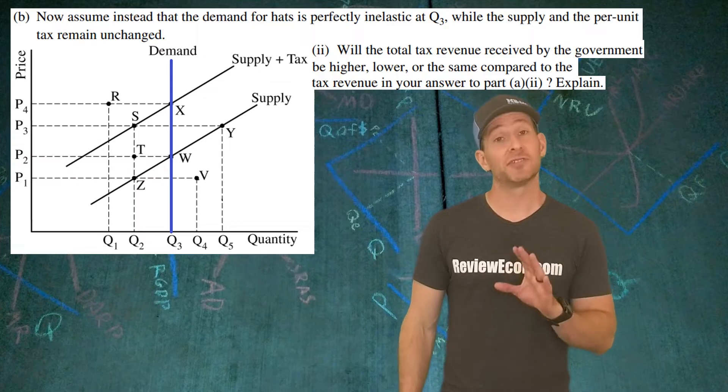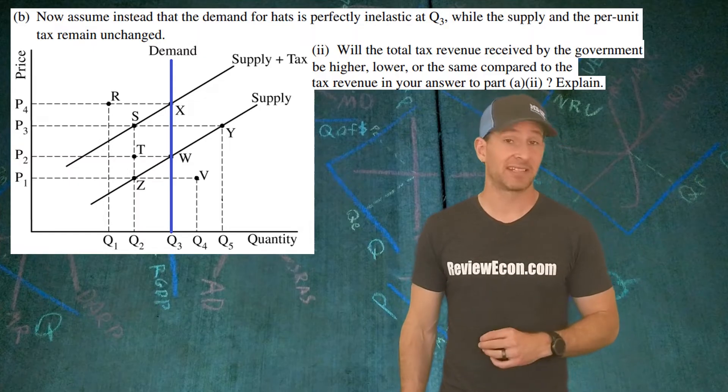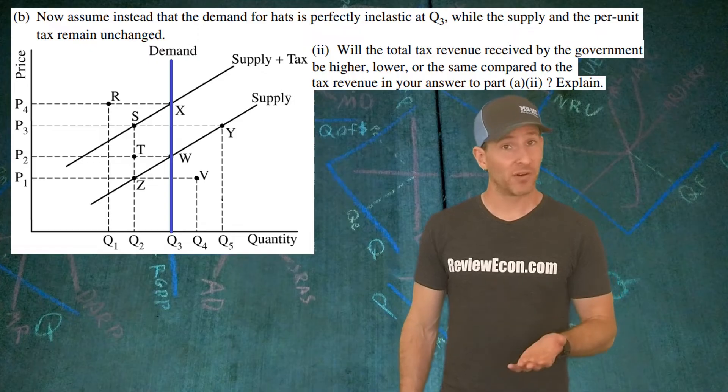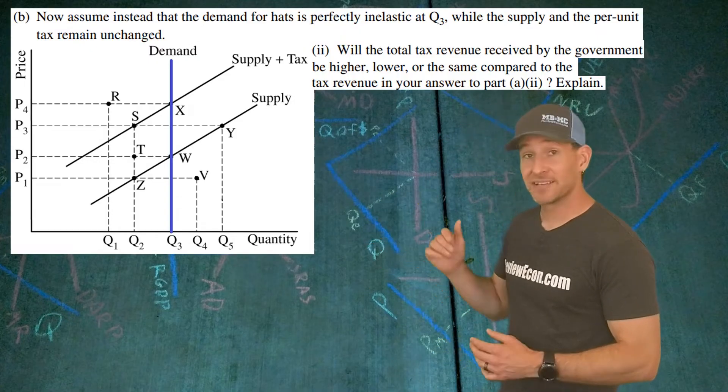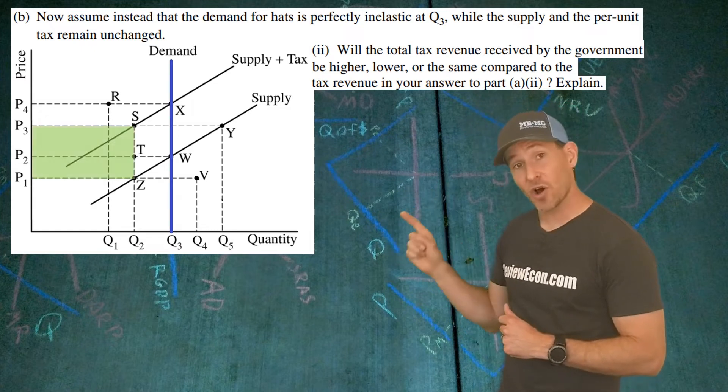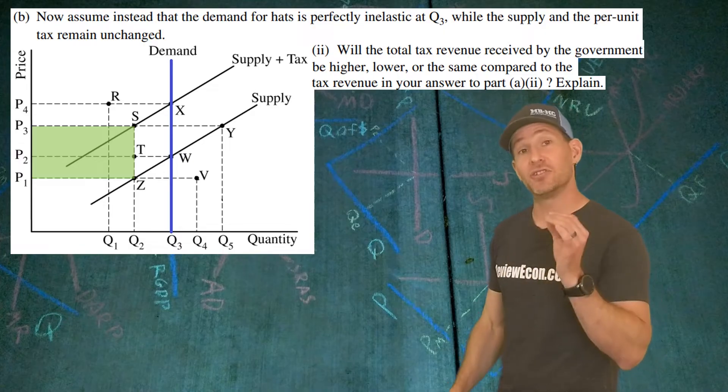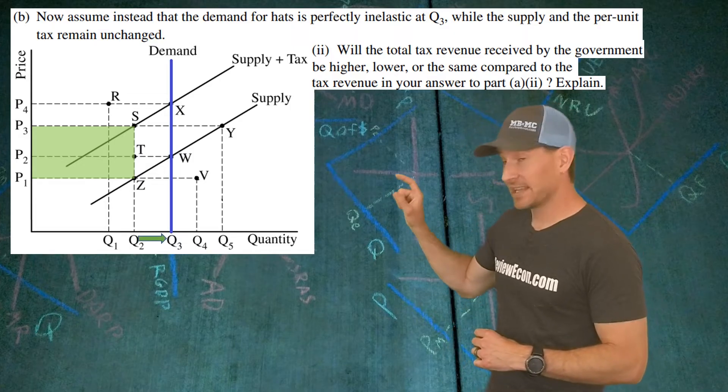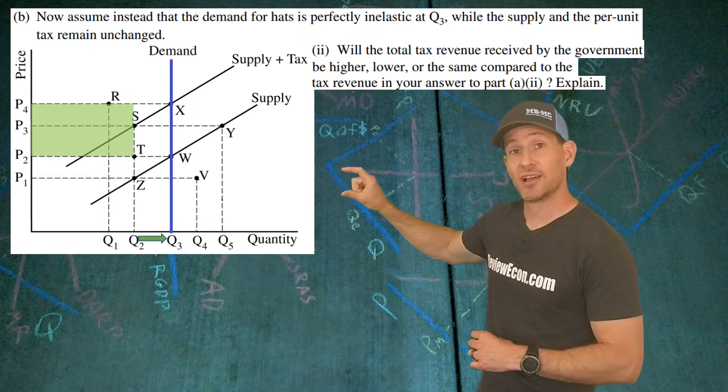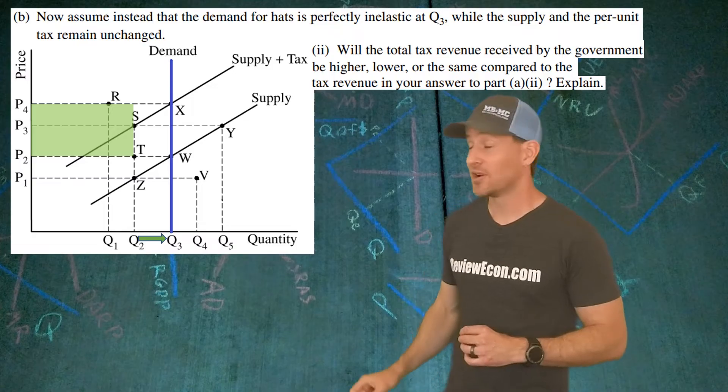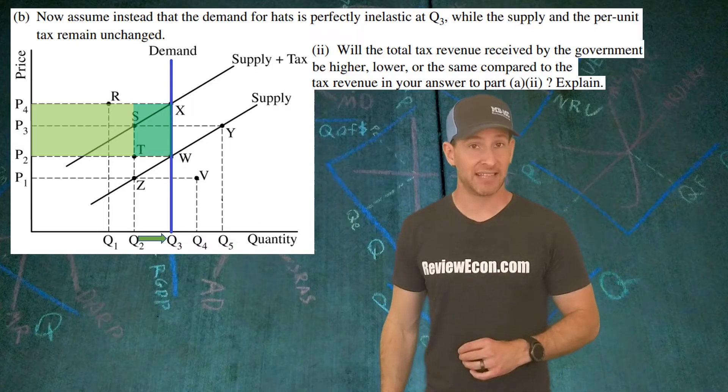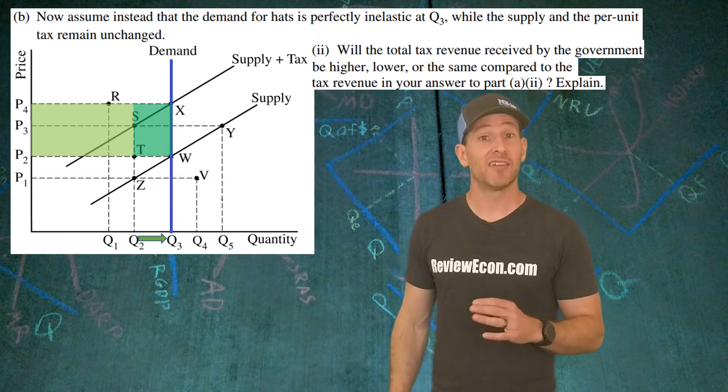For the second part of B, we have to explain what the vertical demand curve will do to the tax revenue the government receives if they impose that same excise tax on this good. Well, in order to figure this out, simply sketch it out. There is our new demand curve that's vertical, and here is the old tax revenue. With the new vertical demand curve, the quantity will no longer decrease as a result of the tax. So this is that amount of tax revenue shifted upward. But that is not the total amount of revenue. Because the quantity is now higher than it was before, we have an additional amount of tax revenue that the government brings in by taxing this good. The moral of this story is that governments can bring in more revenue when they tax goods with inelastic demand.